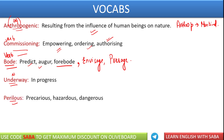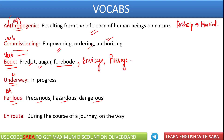Perilous — काफी बार SSC में यह word पूछा गया है. Perilous is an adjective. Perilous means precarious, hazardous, dangerous. तो जो बहुत खतरनाक होता है उसे perilous कहा जाता है — precarious, hazardous, dangerous: all these are synonyms of perilous. Next is en route — it is an adverb. En route basically means on the way — कोई चीज़ रास्ते में हो. जैसे: I met my friend en route — meaning during the course of my journey, on my way, I met my friend. That is called en route.